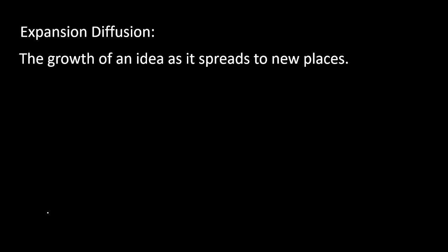The next is Expansion Diffusion, which is the growth of an idea as it spreads to new places. So if Billy brings the balloon to the house for the party and more people buy red balloons, that's Expansion Diffusion because the number of balloons is increasing. The coronavirus is a good example of Expansion Diffusion because as it spread to new places globally, the amount of people with it increased.